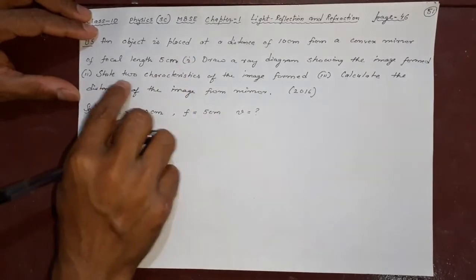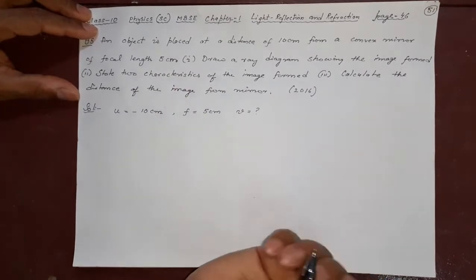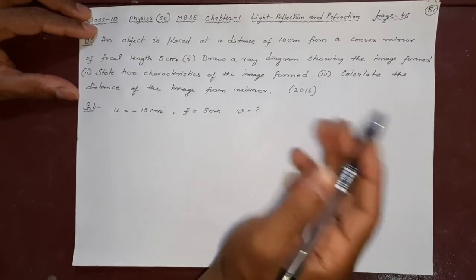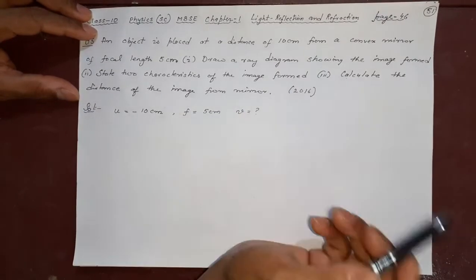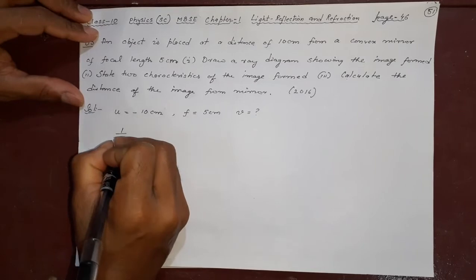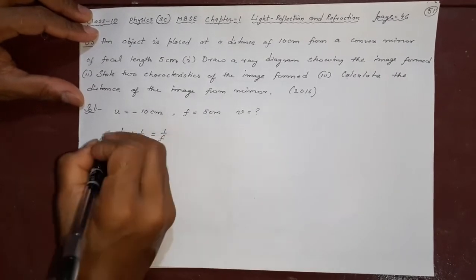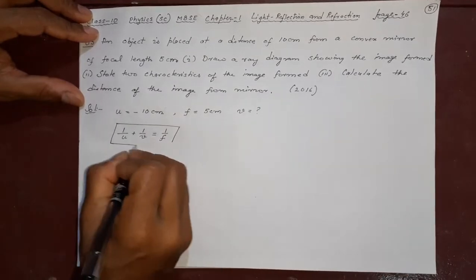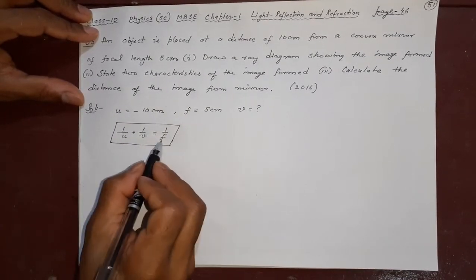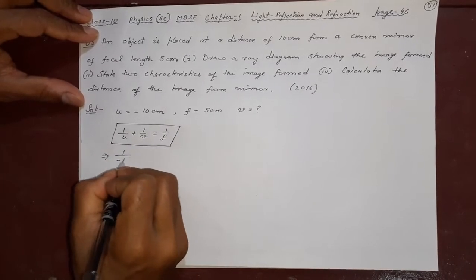I can draw the diagram also and I can tell about the mirror also. So part three we will do first, and parts one and two will come automatically. This question is important — in 2016 it was asked, and maybe in other years also by changing some numbers. So let's use the mirror formula: 1/U + 1/V = 1/F. I have written 1/V and F on the left side because V is unknown, and the known value I am keeping on the right side.